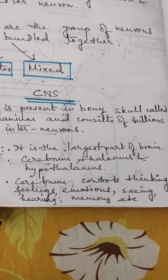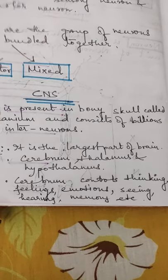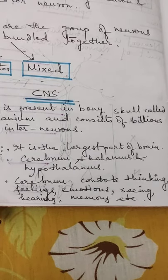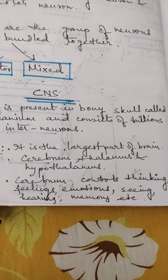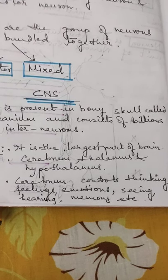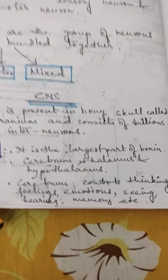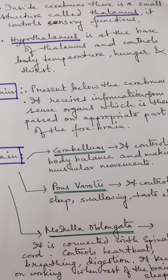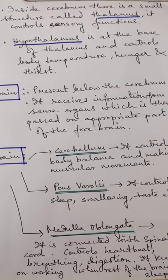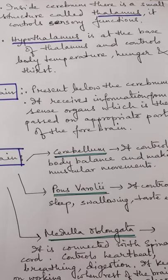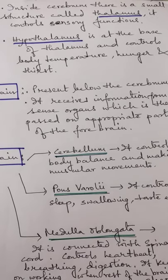Cerebrum's main function is it controls thinking, feelings, emotions, our sight, hearing ability, memory, intelligence, etc. Inside cerebrum there is a small structure called thalamus. It controls all the sensory functions.